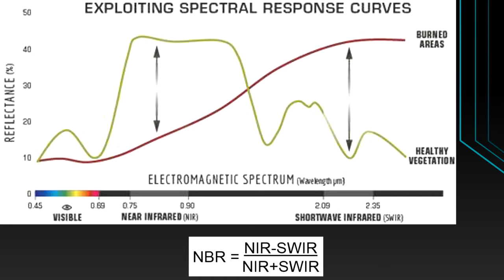In remote sensing, we use indexes to study different phenomena. Just as we use the Normalized Difference Vegetation Index (NDVI) to study vegetation, we study burn areas with the help of the Normalized Burn Ratio, known in short as NBR. The NBR is an index designed to highlight burn areas in large fire zones.